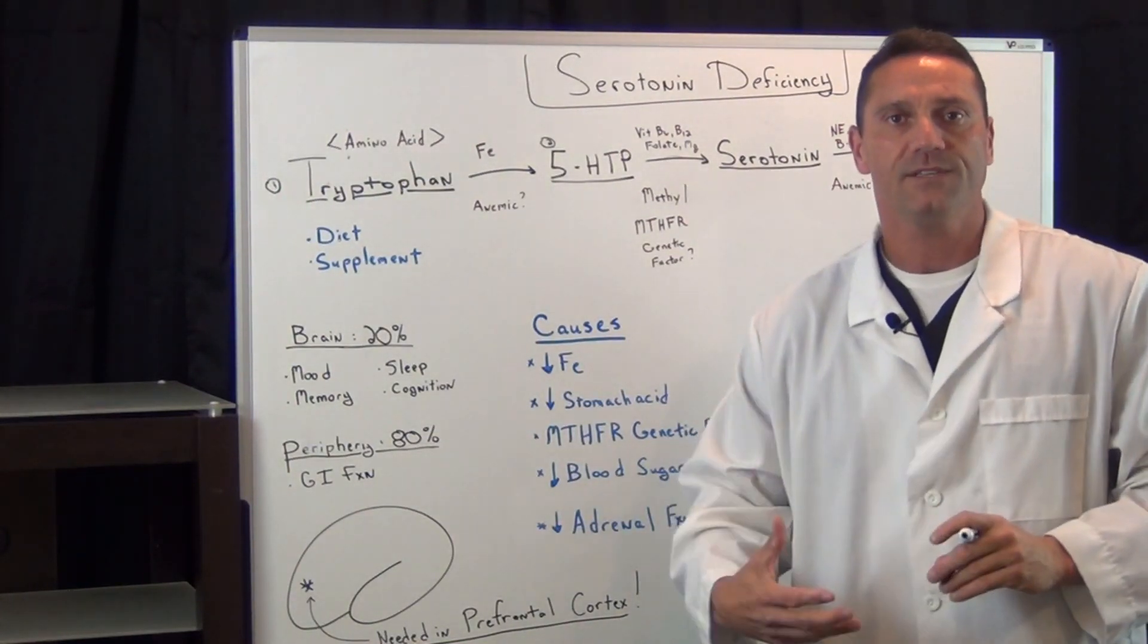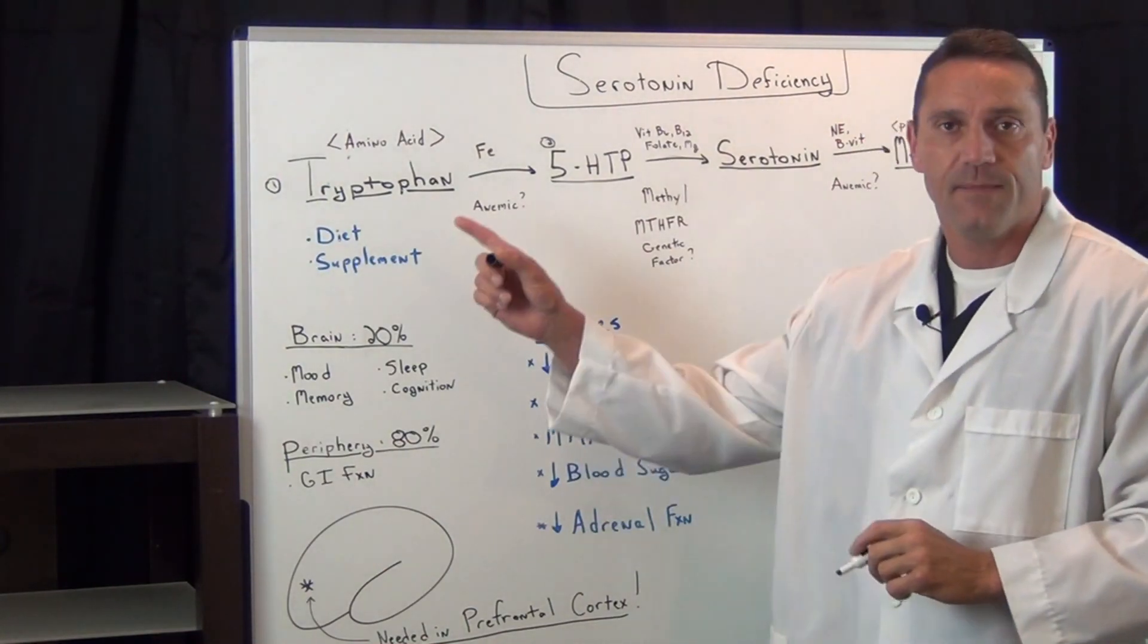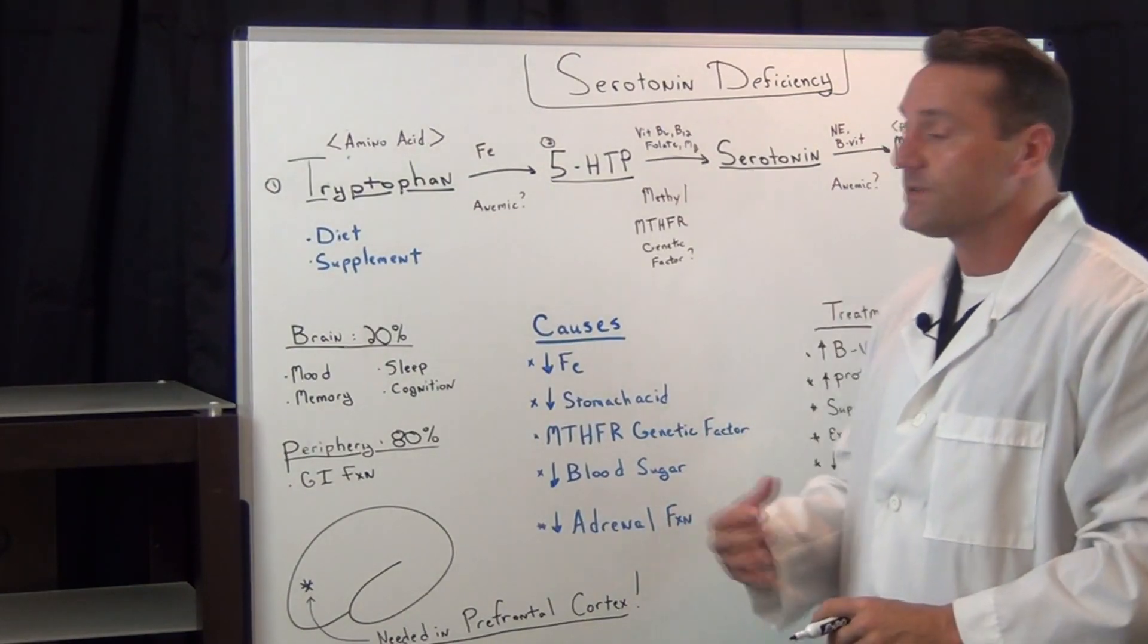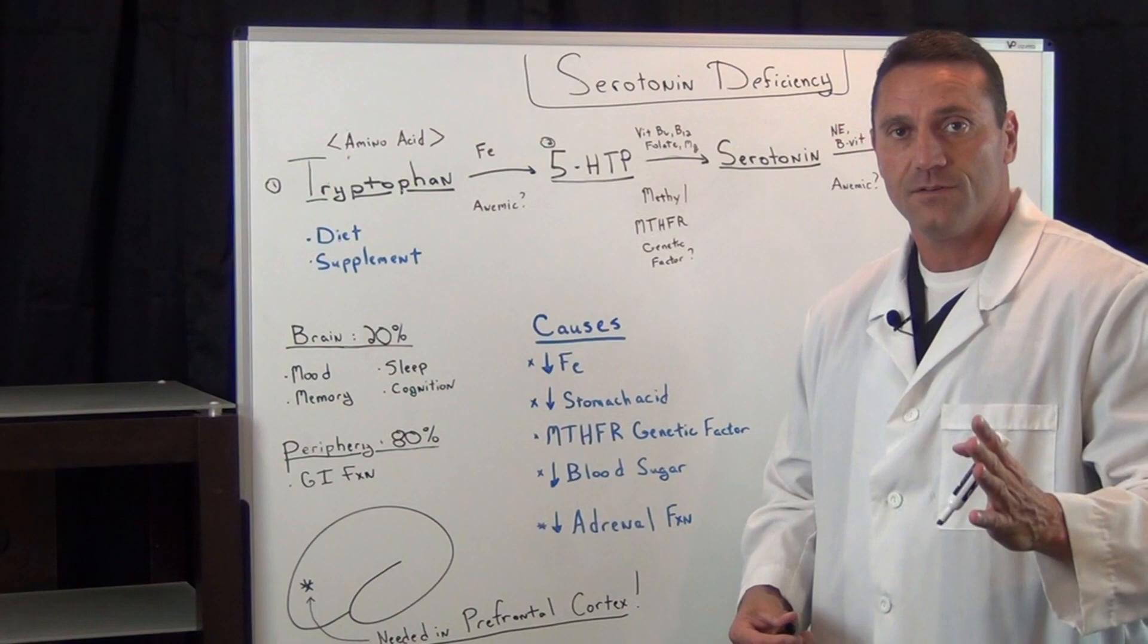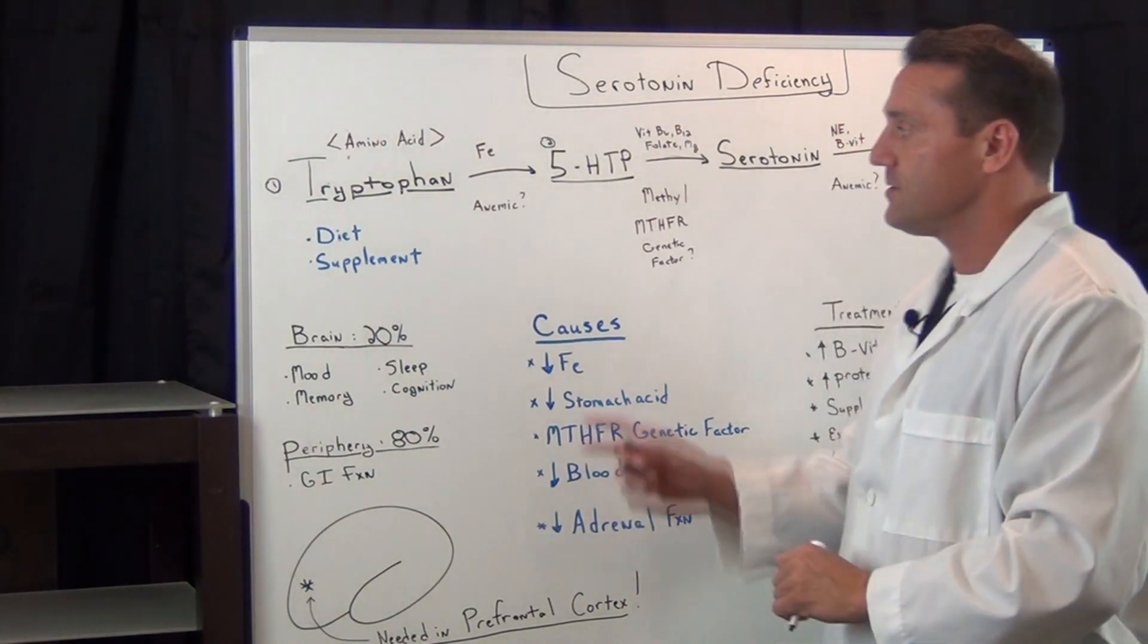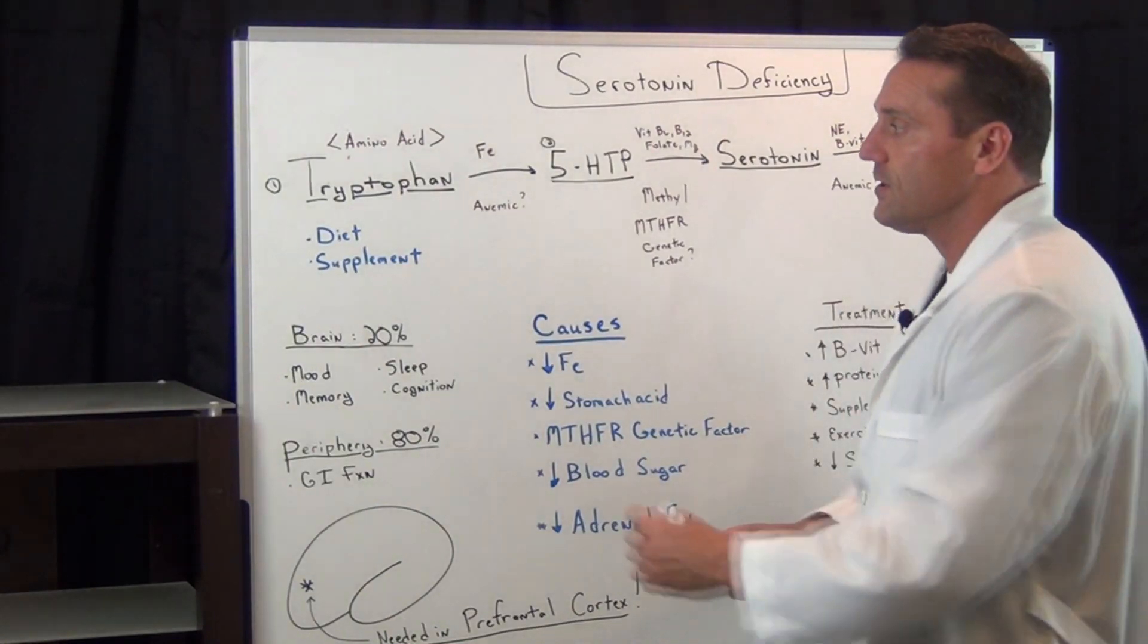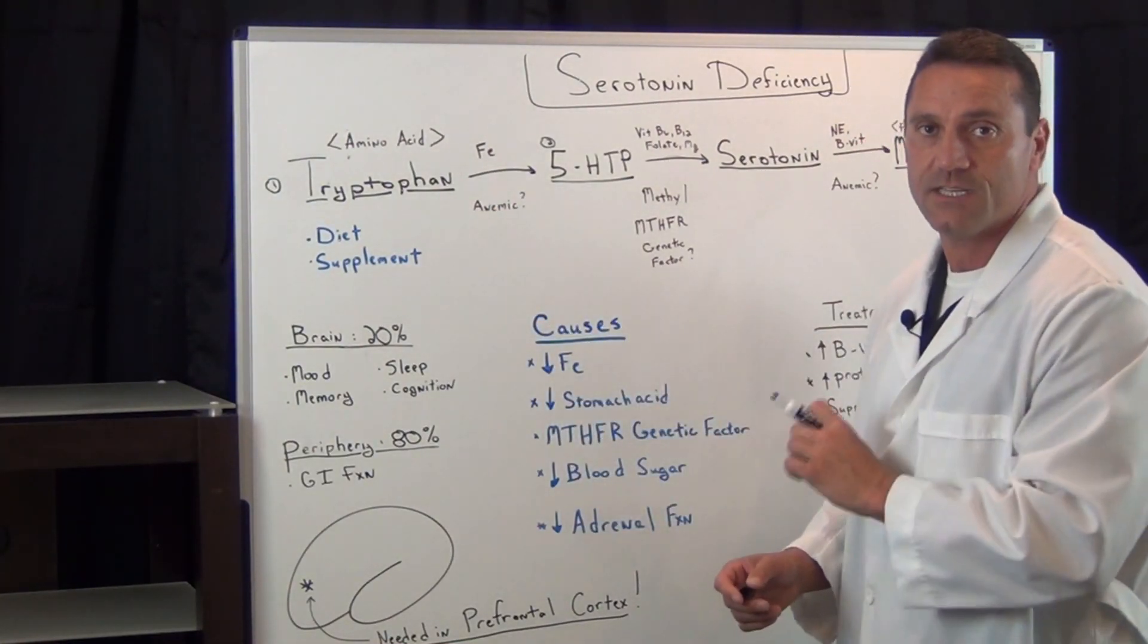So serotonin deficiency. What is it? Where is it made? It's made from, it starts off as an amino acid. L-tryptophan, we ingest this amino acid either with our diet or by supplements. In order to get converted to 5-HTP, we need iron present. So the conversion, first off, you need iron to convert tryptophan to 5-HTP. Now, if you're anemic, you're getting insufficient amounts of iron. So right here, off the bat, there's going to be a low conversion rate.